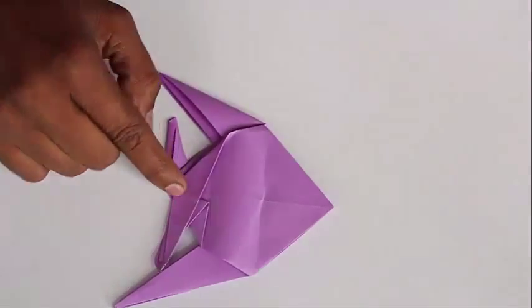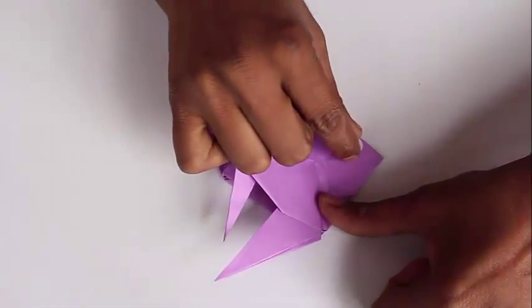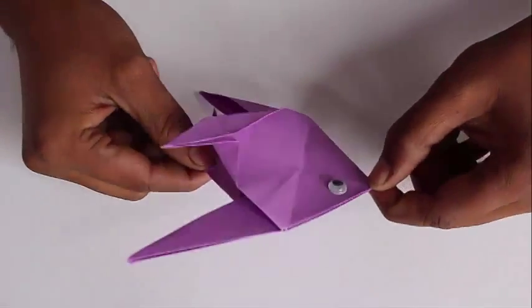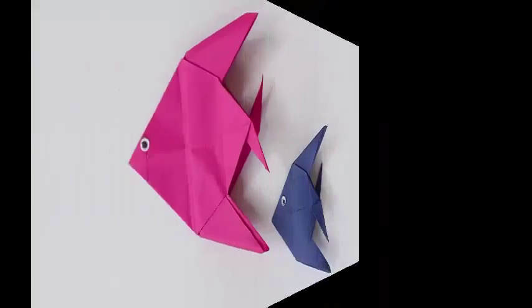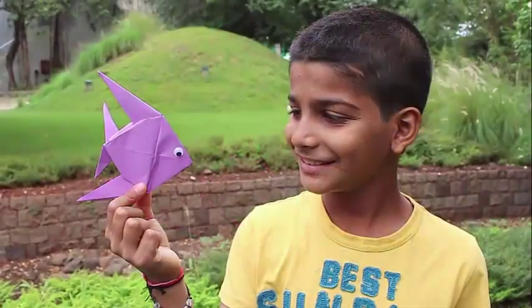To lend character to the angel fish take an eye sticker and stick it. Now the angel fish will become alive. Do this on the back side. You can make angel fishes with various colors and textures.